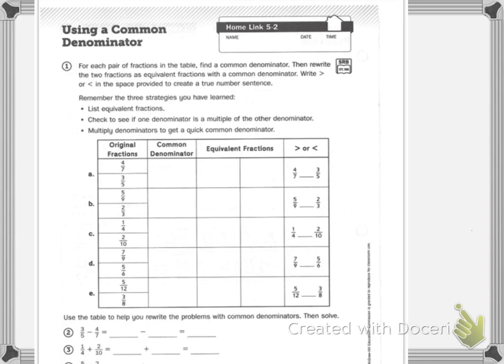I'm looking at problem A and I see 7 and 5 in the denominator. I know that the common denominator is going to be 35.